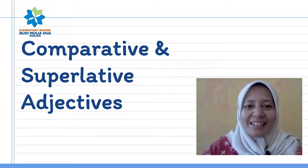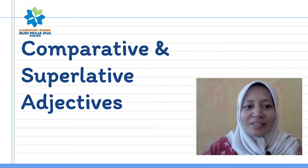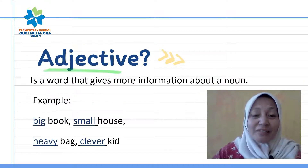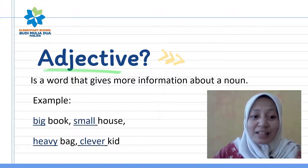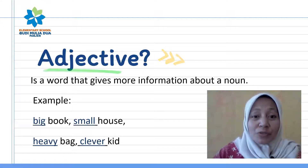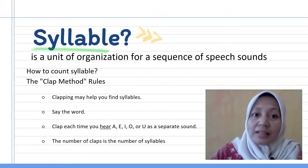Hi, welcome back to the English class with Miss Amy. In this video we are going to talk about comparative and superlative adjectives. Before that, we will review adjectives. An adjective is a word that gives more information about a noun — for example, 'big book': big is an adjective and book is a noun. Other examples: small house, heavy bag, clever kid. Usually an adjective is in front of the noun.